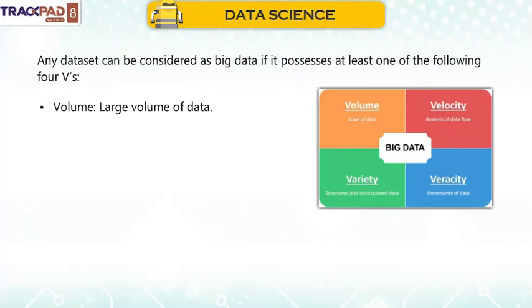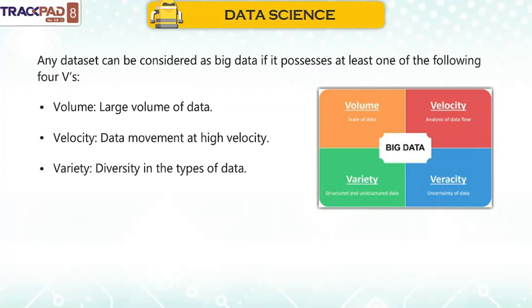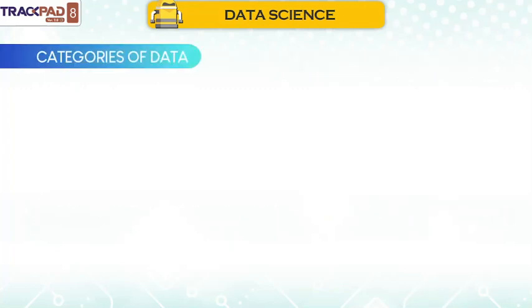Volume: large volume of data. Velocity: data movement at high velocity. Variety: diversity in the types of data. Veracity: data obtained from authentic sources.